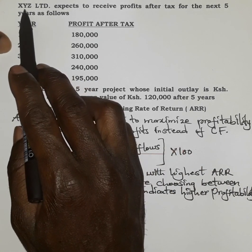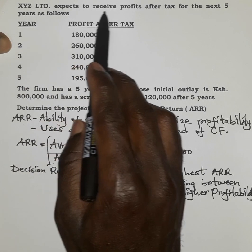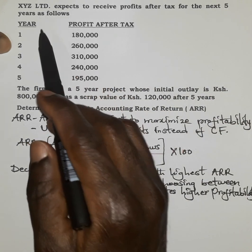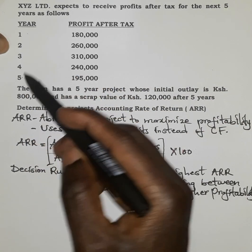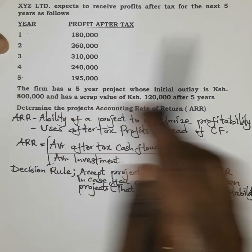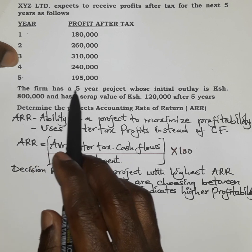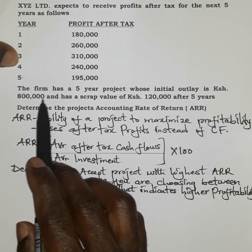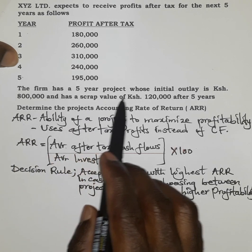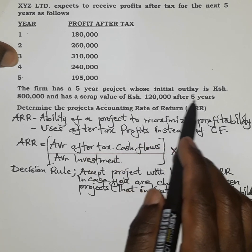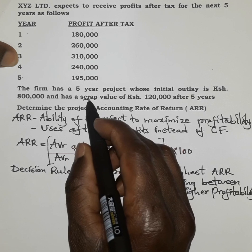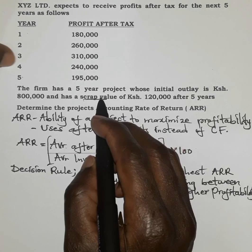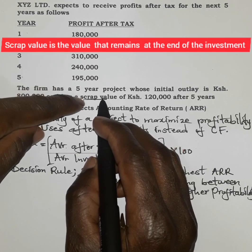The question states: XYZ Limited expects to receive profits after tax for the next five years. The firm has a five-year project whose initial outlay is $800,000 and has a scrap value of $120,000 after five years. Scrap value means the salvage value — the value that remains at the end of the five years. Scrap value is part of the investment.